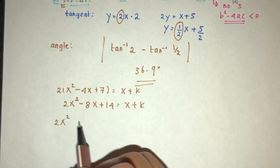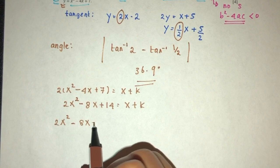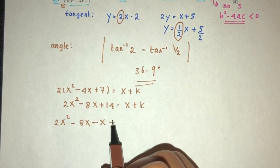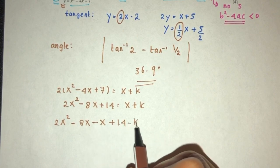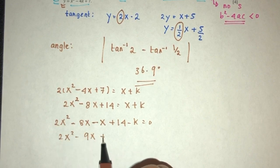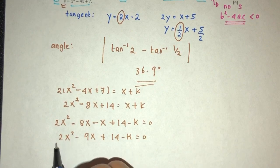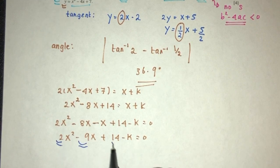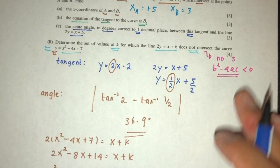Now, we can send everything to one side. You will have this, you will have this minus x plus 14 minus k has to be 0. So, 2x squared minus 9x plus 14 minus k have to be 0. Now, this is my a value, my b value, and my c value. So, we place back in this main equation.